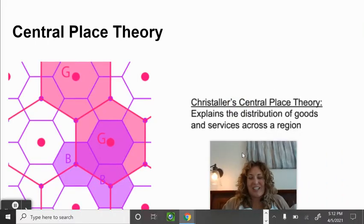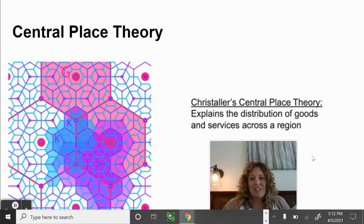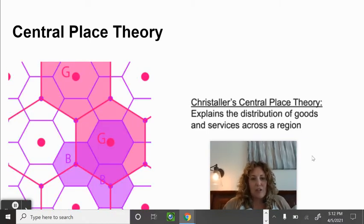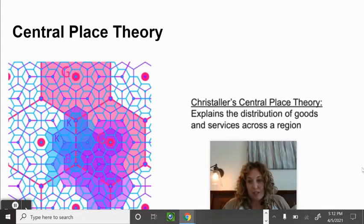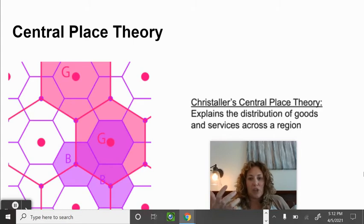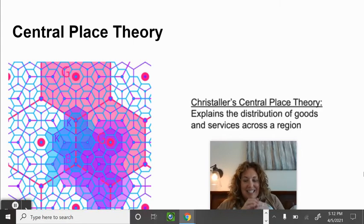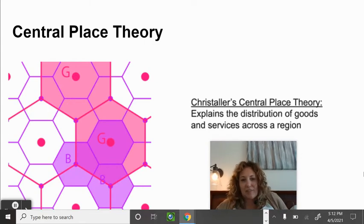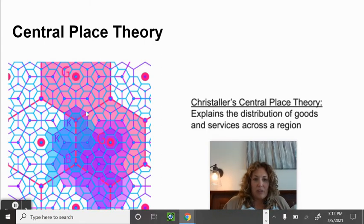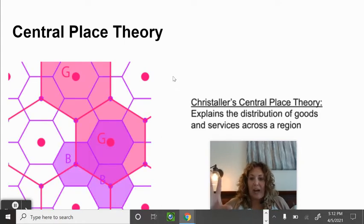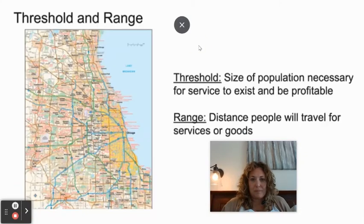Christaller's central place theory explains the distribution of goods and services across a region. He uses hexagons because they easily nest together without creating overlapping spaces. Each hexagon represents a place and the range of the goods and services there. Key vocab: threshold is the size of population necessary for a service to exist and be profitable; range is the distance people will travel for those goods or services.